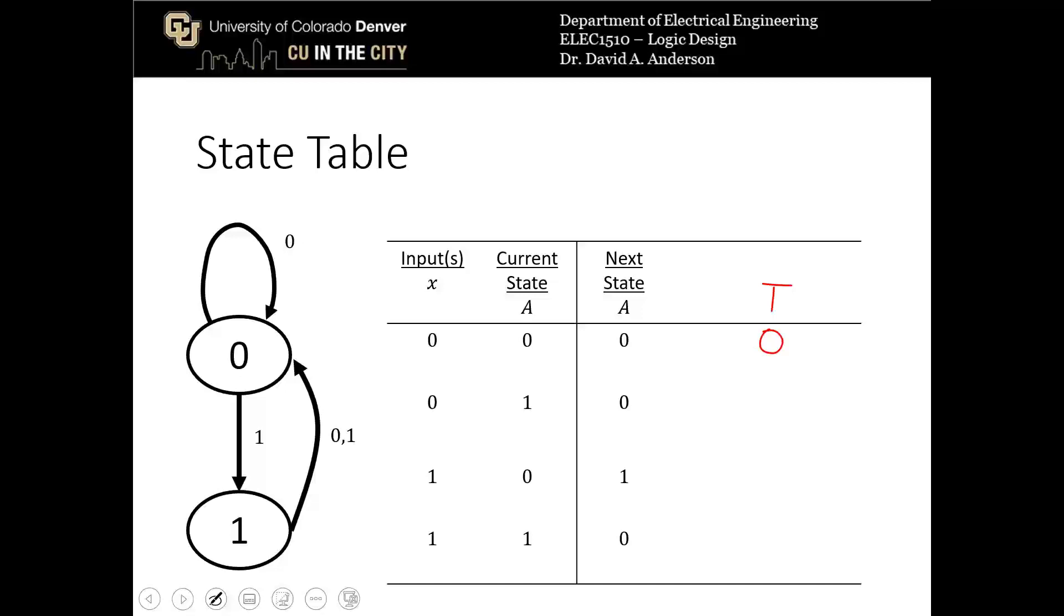When the current state is a 1 and the input is a 0, we move to a next state of 0, so the output toggles, meaning T has to be a 1. And for the last row, T again toggles, which means that the expression for T is X or A.